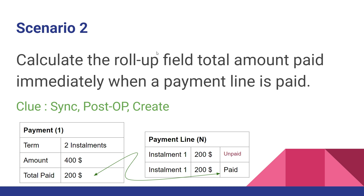To update the roll-up field immediately, you have to write a plugin that runs against the status change of the payment line and recalculates the roll-up field immediately. Write the plugin in synchronous mode, registered in pre-operation of the value update or on the create or update of the status, and update the total paid value right away.